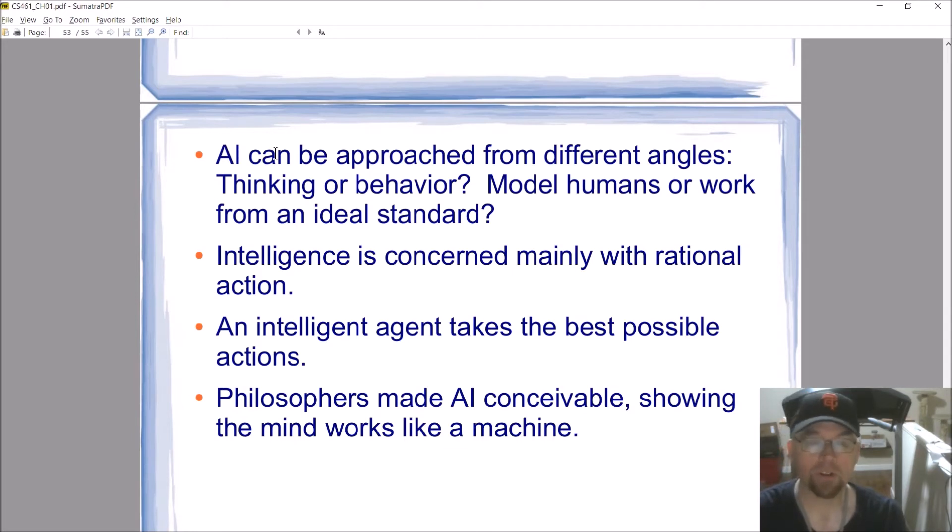Are you talking about how a machine thinks or how it behaves? Should you be trying to make a machine that acts like a human or base it off of human behavior, or do you have some other kind of standard, some kind of ideal? So we're concerned with treating intelligence as if it was rational, right? We're trying to make an agent, an intelligent agent, act rationally.